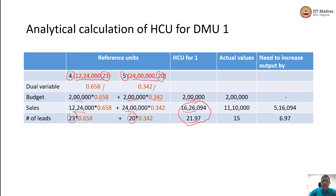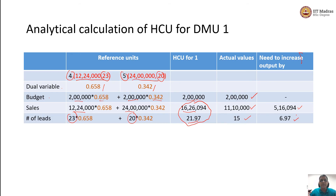Currently DMU 1 is using a budget of 2 lakhs, generating sales of 11 lakhs 10,000 and 15 leads. DMU 1 has to increase its output by 5 lakh rupees in sales and almost 7 more leads to be generated. Only then will DMU 1 be called an efficient DMU. The only change from the previous session is that we have scaled the dual variables so they add up to 1, rather than using the raw dual variable values.